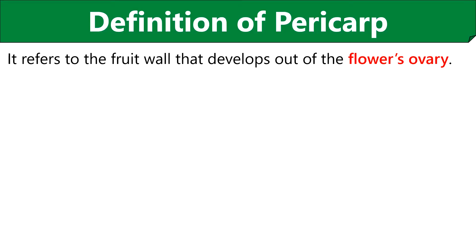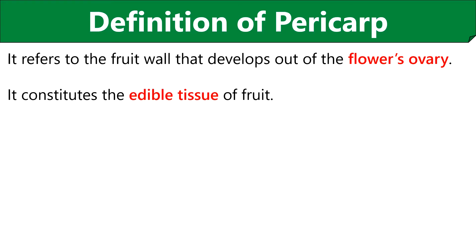We will start this video by defining the term pericarp. We can define pericarp as a fraction of the fruit that develops from the flower's ovary and it encloses the seed that is developed after the fertilization of ovules. In most of the fruits like mango, berries, plum, peaches, etc., a pericarp is the edible portion that forms around the seed.